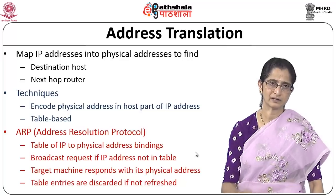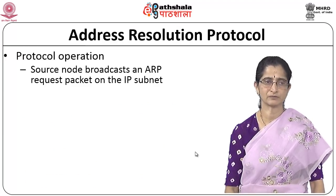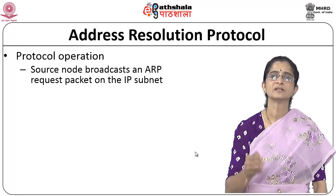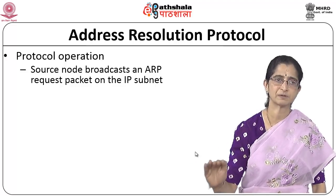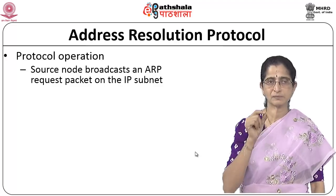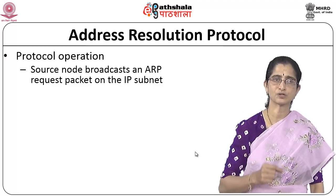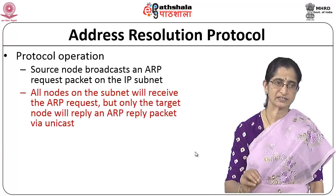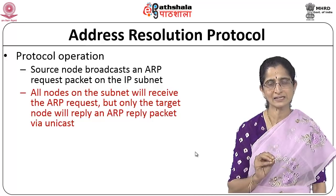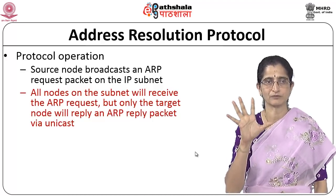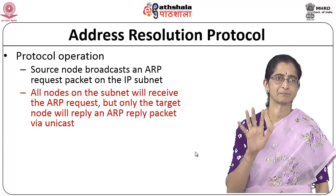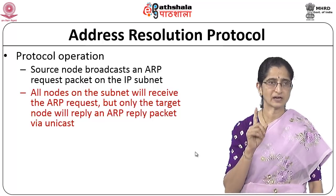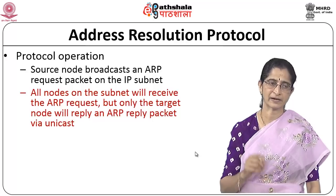ARP operates as follows: you have an IP address and need to find the corresponding physical address. The source node which wants to send the packet broadcasts an ARP request packet on the IP subnet. All nodes on the subnet receive this ARP request. The request says: 'This is the IP address I am looking for — whoever has a matching IP address, please reply with your physical address.' When broadcast, everybody receives it, but only the target node with the matching information sends back a reply packet, and it unicasts that packet.